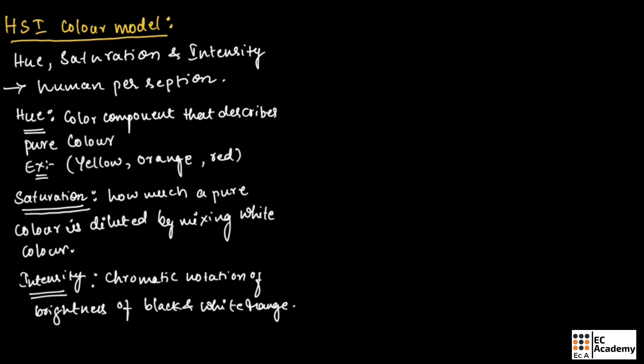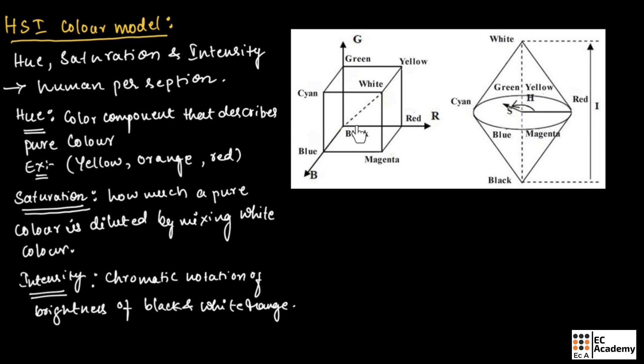Now let us consider an RGB cube. In this RGB cube, the dotted line between black and white represents the intensity. To understand the HSI model, let us place black at the bottom and white at the top. We will take the same RGB cube and place black at the bottom and white at the top.